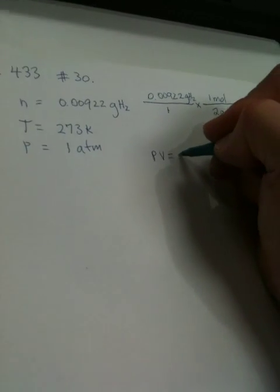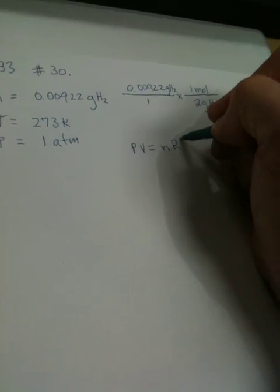And now, we have three of the four variables for PV=nRT. Remember, PV=nRT looks like this, NRT.